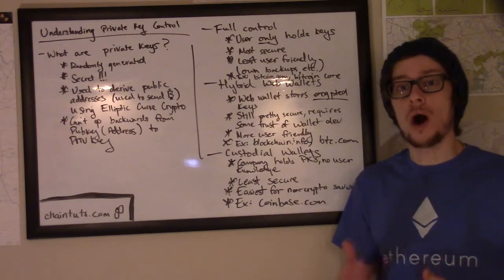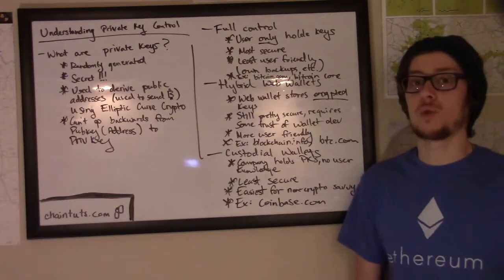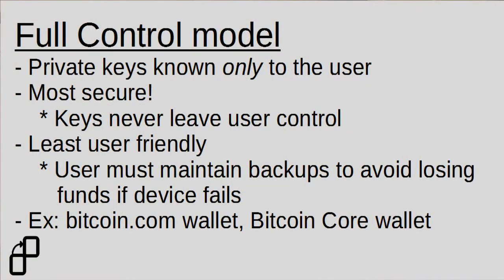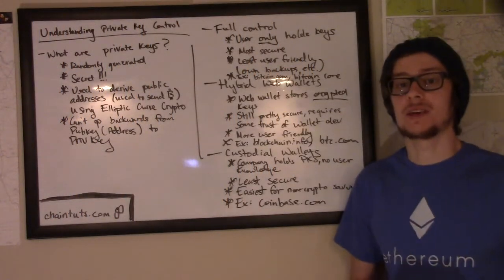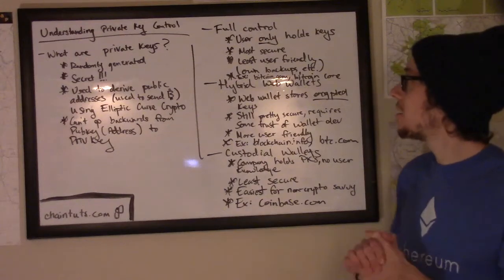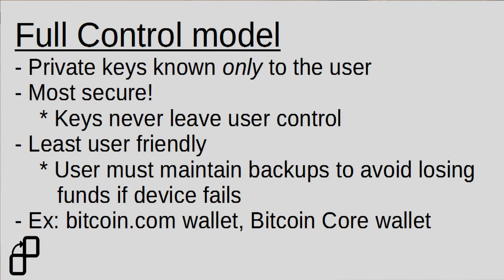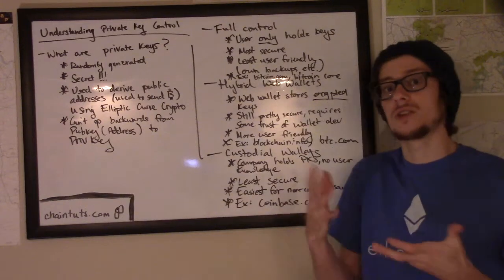So what are some different ways that wallet software uses to store and secure these private keys? The first model is what I would call a full control model. These are wallets like the Bitcoin.com wallet or the original Bitcoin Core full node wallet. In this model, only the user has access to the private keys stored in the wallet — they don't go to a web server anywhere, and no one knows about them except the user. This is by far the most secure implementation; the private keys never leave the wallet software, never leave the device that the wallet is stored on, and therefore there's no amount of trust involved as long as it's securely implemented.